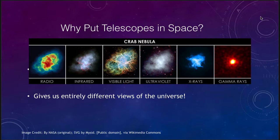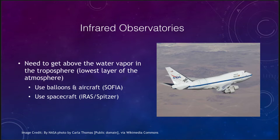Getting a complete picture means we need to look at an object across the entire electromagnetic spectrum. Let's look first at some infrared observatories. Infrared is one of the easier ones because all we have to do is get above the water vapor in the lowest layer of the atmosphere — the troposphere. Once we are above the water vapor, most of the infrared does make it down to the earth, since it is water vapor and other gases that absorb the infrared radiation.